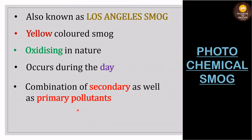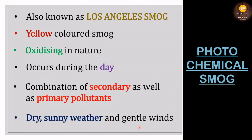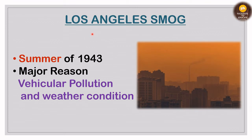Photochemical smog is a combination of both primary and secondary pollutants. It occurs in dry, sunny weather where gentle winds are blowing — opposite to classical smog which requires cold and moist conditions. The Los Angeles smog occurred in the summer of 1943. The major reasons were vehicular pollution and dry, sunny weather conditions with gentle winds. We will see the formation of photochemical smog to understand why vehicular pollution was the major cause.